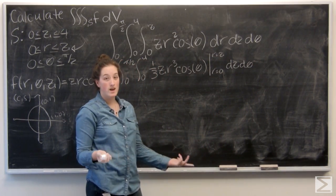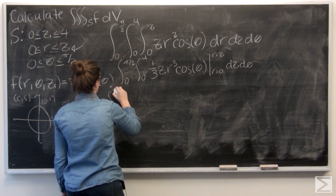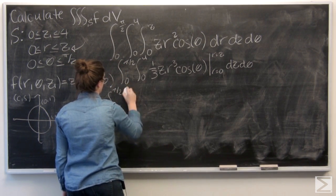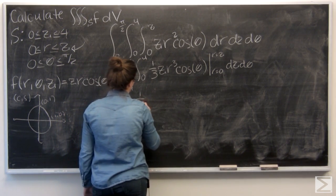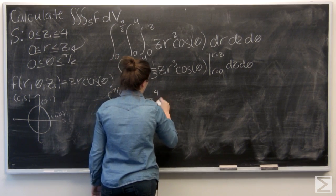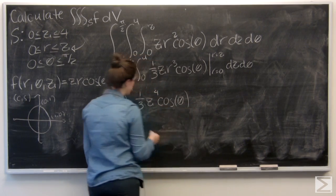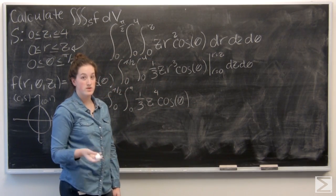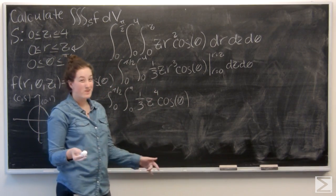So plug in the z everywhere I see an r. So I've got one-third z to the fourth cosine theta. And then for r equals 0, that becomes 0, so I don't have anything to subtract.